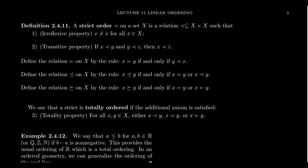The reason I started with a strict order is that to prove lines have an ordering, it'll be easier. A strict order has only two axioms — irreflexive and transitive — as opposed to a partial order, which has three axioms: reflexive, anti-symmetric, and transitive. So the proof will actually be simpler by using a strict order.